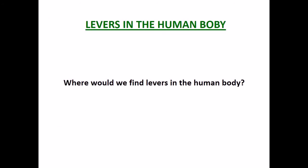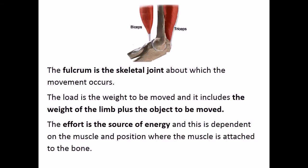Levers in the human body. Where would we find levers in the human body? The fulcrum is the skeletal joint about which the movement occurs. The load is the weight to be moved and it includes the weight of the limb plus the object to be moved. The effort is the source of energy and this is dependent on the muscle and position where the muscle is attached to the bone.